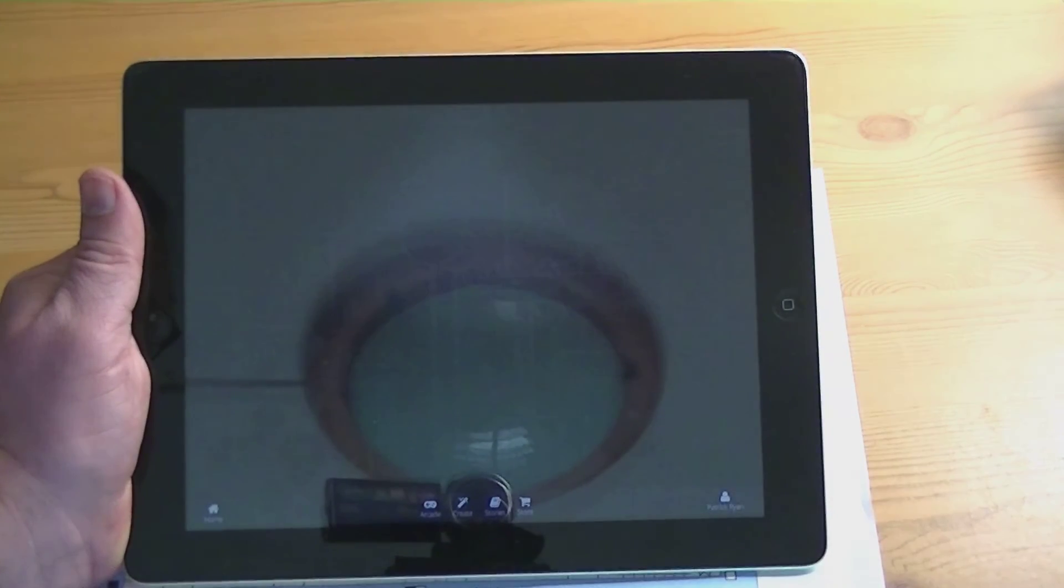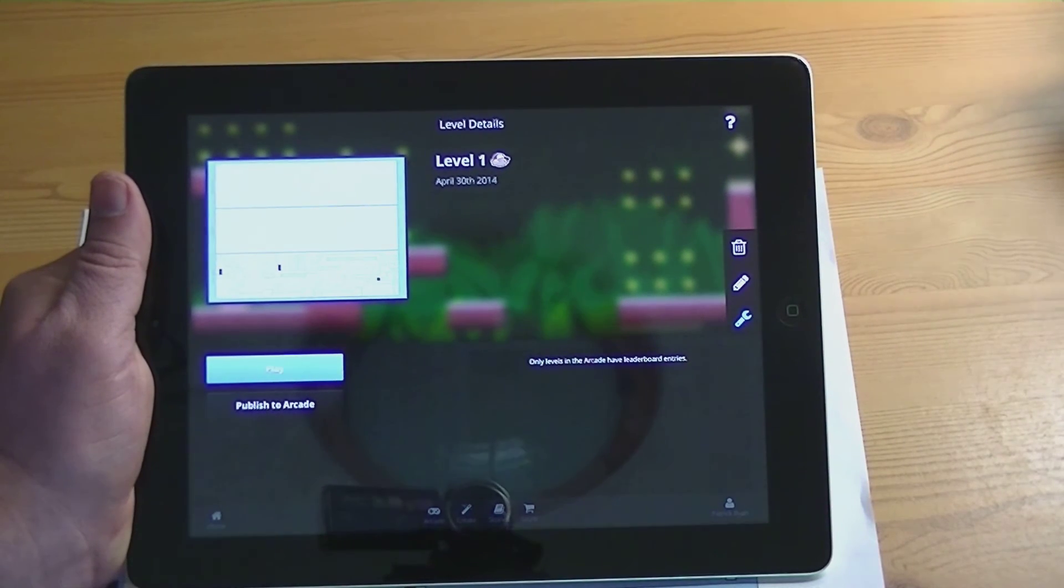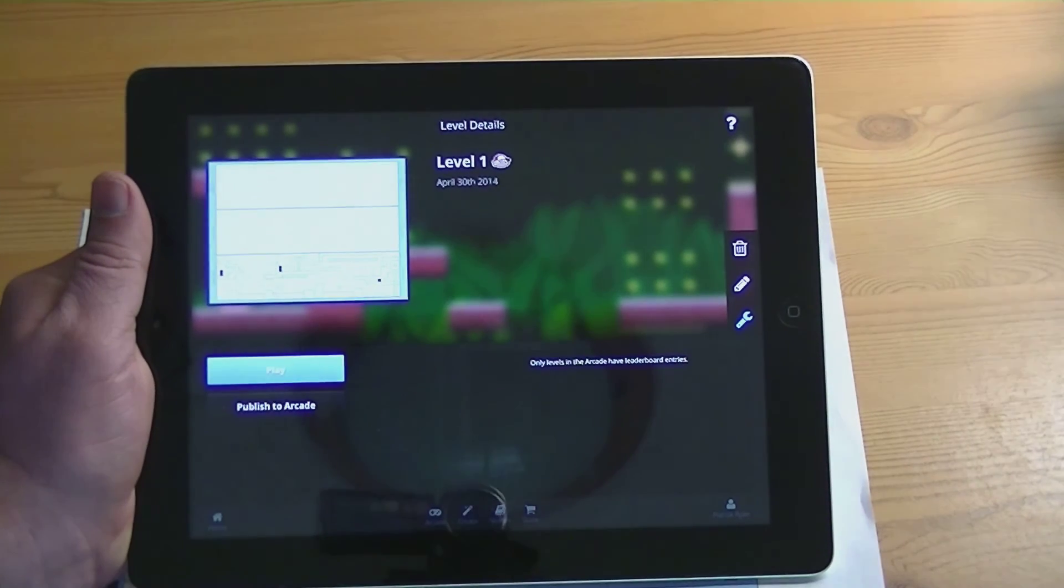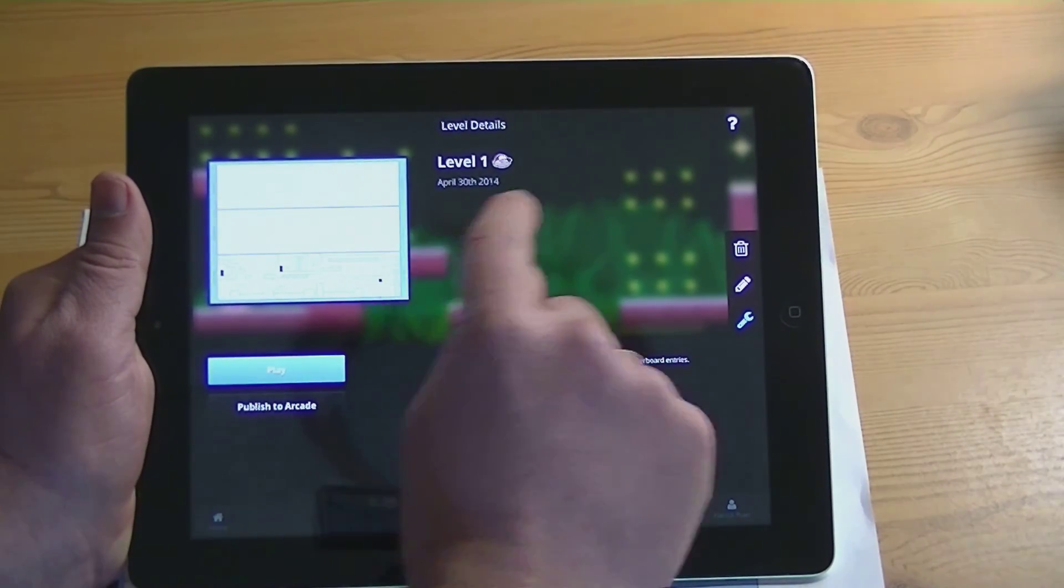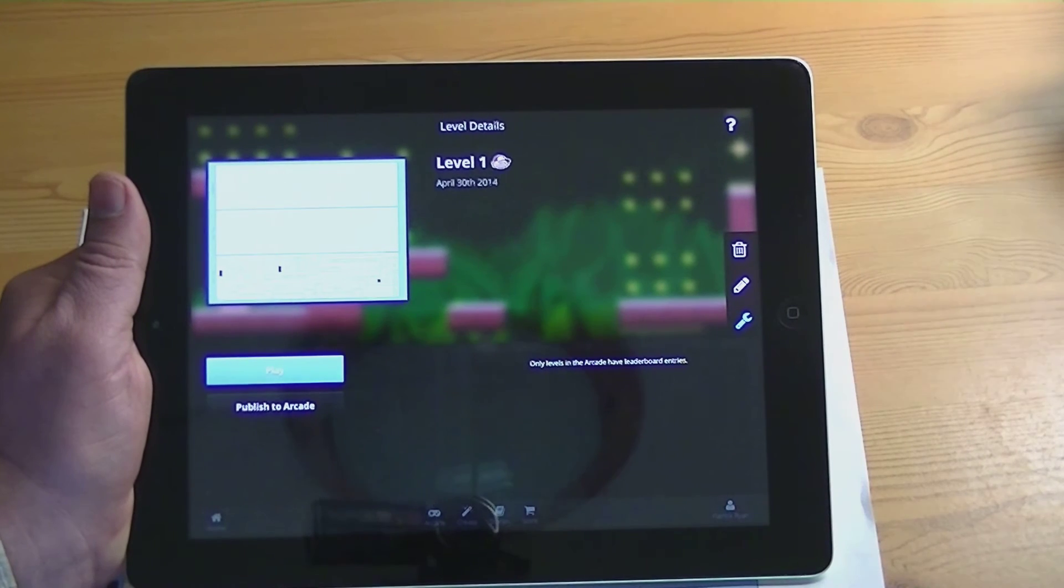And you can send it out. So once it's there, you have the option of going in. Load times are a little bit slow right now, I'm sure that's just because they're still getting the server going. So you can go through and you can publish to the arcade if you want. Only levels in the arcade have leaderboard entries. So when you publish them, it'll actually start telling you how many people have played it, who's got the best score on it, and so on.